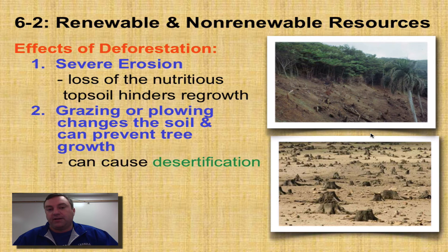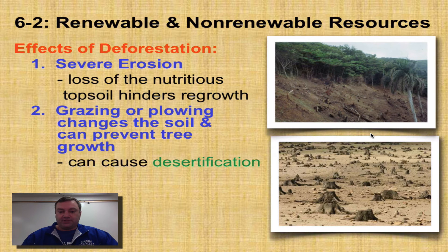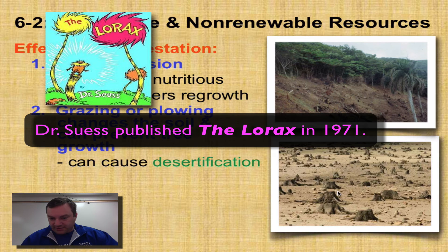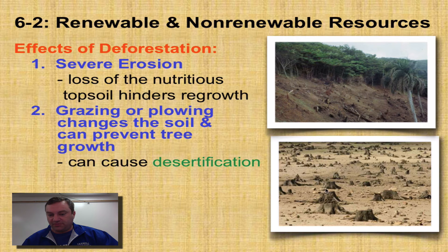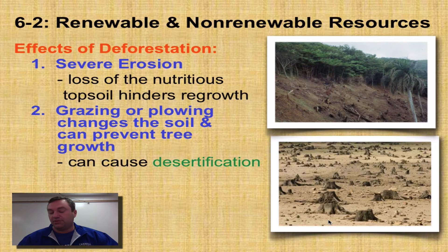If we cut down a forest to use it for grazing livestock or farmland, the plowing and grazing can prevent trees from coming back. If we clear a forest and plant corn, we're not going to let trees grow in the cornfield. Livestock grazing in the cleared forest may destroy all the remaining plants. What once was a forest can become completely desertified — bone dry with no plants growing whatsoever. That is straight-up desertification.